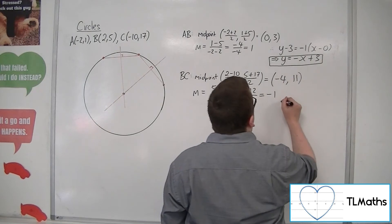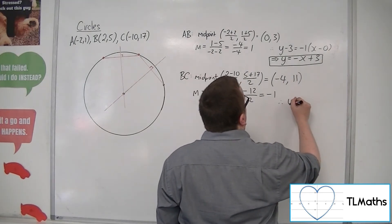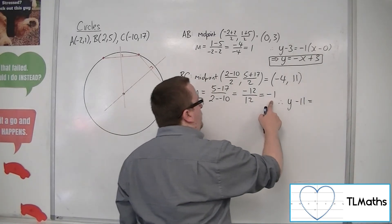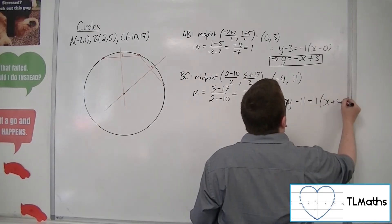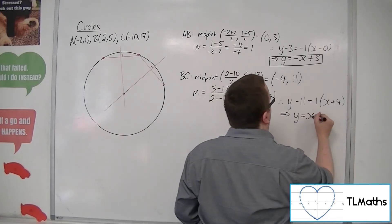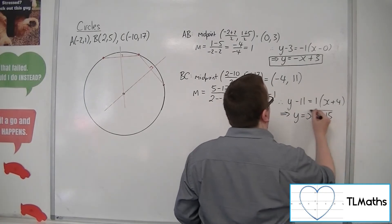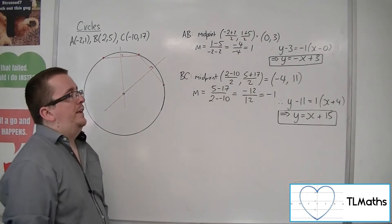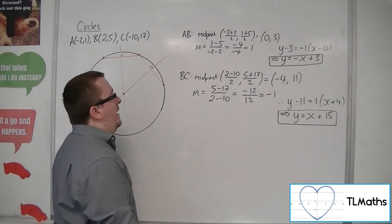So the perpendicular bisector equation is y minus 11 equals the negative reciprocal of minus 1, which is just 1, times x plus 4. So y equals x plus 4 plus 11, giving y equals x plus 15. That is the second perpendicular bisector, and now I need to find where they intersect.